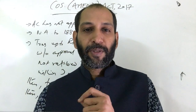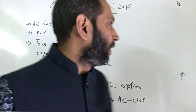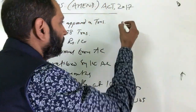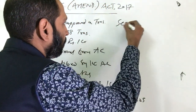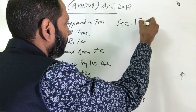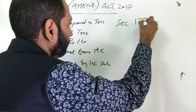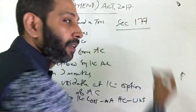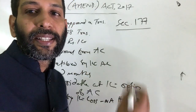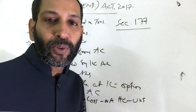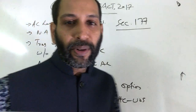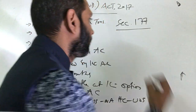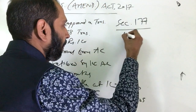We are going to discuss the Companies Amendment Act 2017 provisions with respect to Section 177. Section 177 deals with the audit committee.